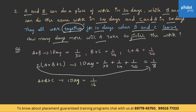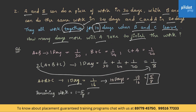They worked together for 10 days. For 1 day the work is 1 by 16, so for 10 days it is 10 by 16, that is 5 by 8. This is the part of work done in 10 days. The remaining work is 1 minus 5 by 8, that is 3 by 8. As B and C left after 10 days, A alone must complete the remaining 3 by 8 part of the work.